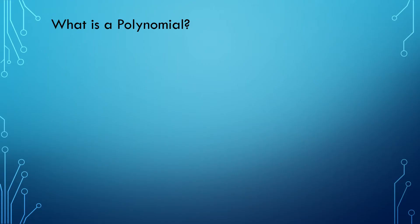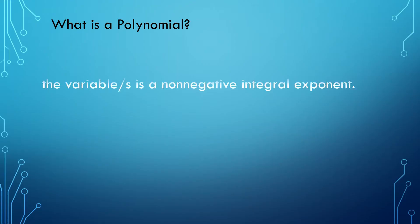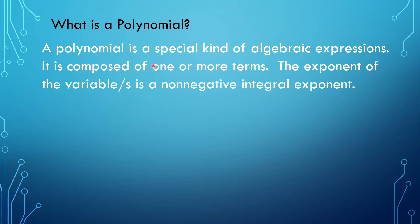So what is a polynomial? Just a short review. A polynomial is a special kind of algebraic expression. It is composed of one or more terms. The exponent of the variable or variables is a non-negative integral exponent, meaning the exponent of a letter is not negative and it's not a fraction.